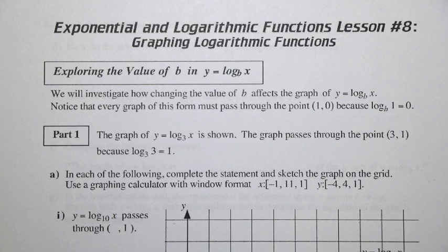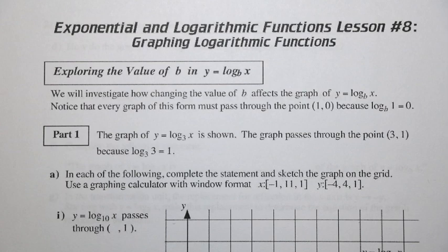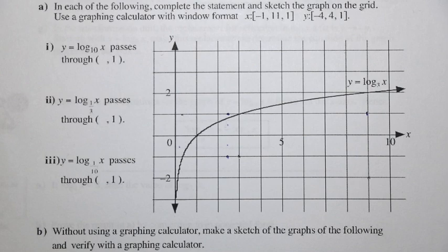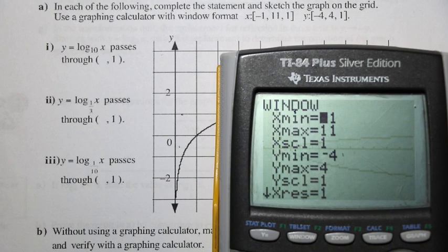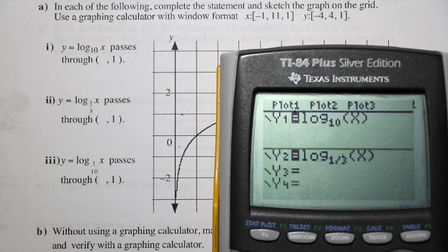Let's complete the statement and sketch the graph. We're going to use this window of negative 1 and 11 for x min and x max, and y min will be negative 4 and y max will be positive 4. Let's take a look at y equals log base 10 of x, or just log x. We can use our graphing calculator. I'll show you the window settings — x minimum negative 1, x maximum 11, y minimum negative 4, and y max 4.